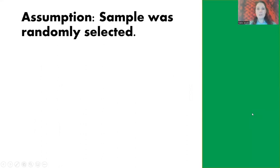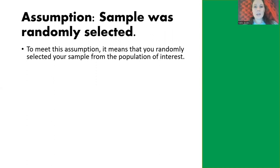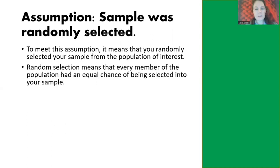Our last assumption is that our sample is randomly selected. This is a little tricky with the one-sample z-test because we're dealing with a sample and a population. To meet this assumption, we must have randomly selected our sample from the population of interest. In our example, we wanted to see if our sample of NBA players was significantly taller than the entire population of biological males. Random selection means every member of the population had an equal chance of being selected.